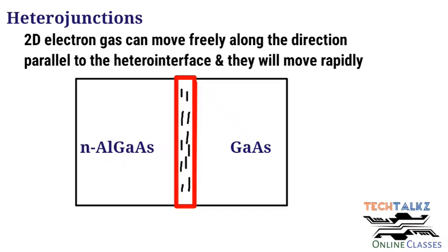In homo PN junctions or in bulk semiconductors, there will be scattering due to impurities. But in the heterojunction at the accumulation layer, there is no scattering due to impurities. And the mobility of electrons is very high because of the effective mass of electrons.